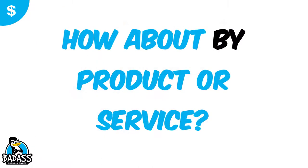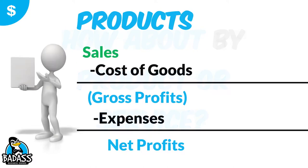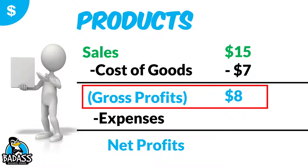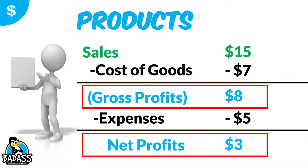Now, what if you were trying to figure this out by a product or service that you sell? You can follow the exact same thing. Let's take a look at a product. We have our sales of $15. The cost of goods sold is $7, which means the gross profits on that product is $8. Then you set aside $5 for expenses in the company, which means the net profits are going to be $3. That's a high expense ratio, but it gives you an example of how profits flow through the business.